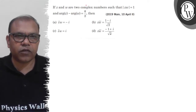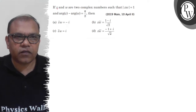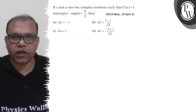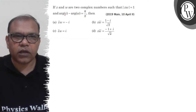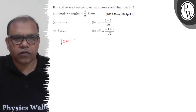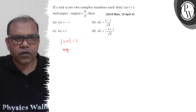Hello, let's see the question. The question says, if z and omega are two complex numbers such that mod of z omega equals 1 and argument z minus argument omega equals pi by 2. There are 4 options. The first condition is mod of z omega equals 1, and the second condition is argument z minus argument omega equals pi by 2.